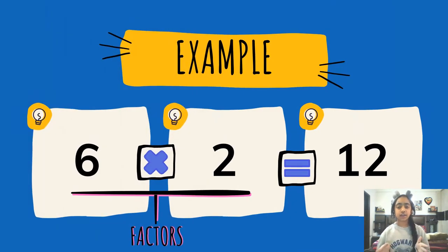Over here we have 6 times 2 equals 12. As said before, 6 and 2 are the factors and 12 is the product.